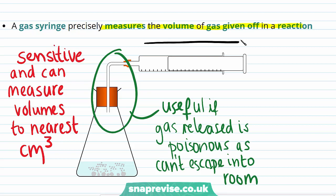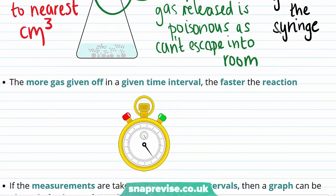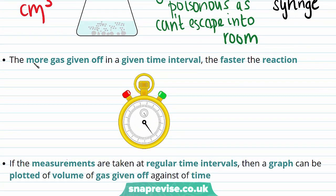The way it works is that this plunger moves backwards as the syringe fills with gas, and these indications on the side indicate how much gas is in the syringe. This can be easily related to the rate, as the more gas given off in a given time interval, the faster the reaction happens.